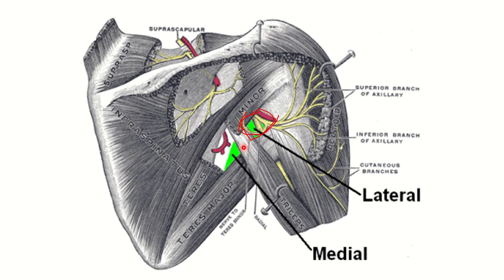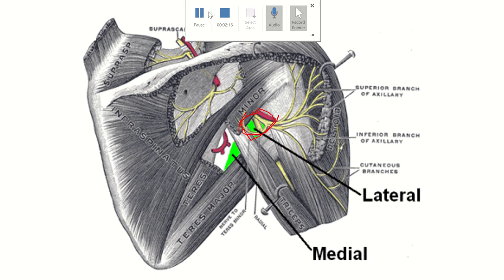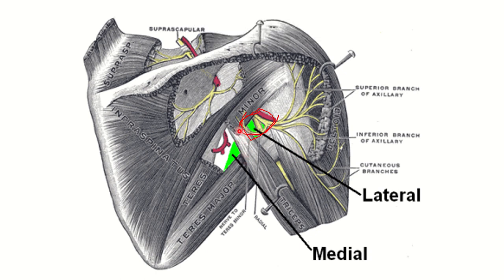The medial boundary is formed by the long head of the triceps muscle, and the lateral boundary is formed by the lateral head of the triceps muscle. So medially it is the long head and laterally it is the lateral head of the triceps.